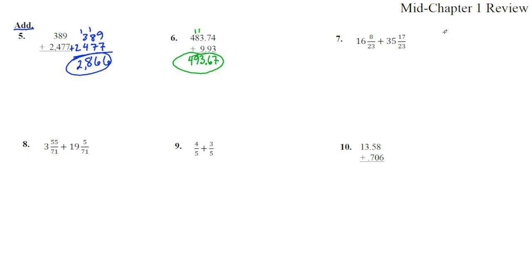Number 7, 16 and 8 23rds plus 35 and 17 23rds. All right, 8 23rds plus 17 23rds is 25 23rds, which we're going to slide off the 23rds, 23 23rds, that adds a 1 right up there, like that.